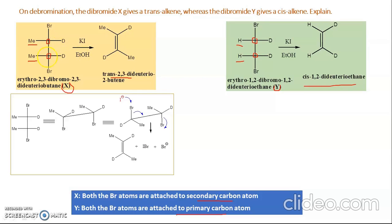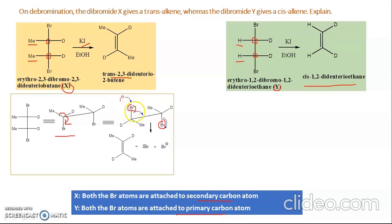We will change these two molecules from Fischer projection to sawhorse. For molecule X, we write it in sawhorse and rotate the front carbon so that the two bromine atoms are trans to each other. Here we are using KI — iodide acts as a base, attacks the Br forming IBr, there is generation of a new C–C bond, and the C–Br bond is broken.